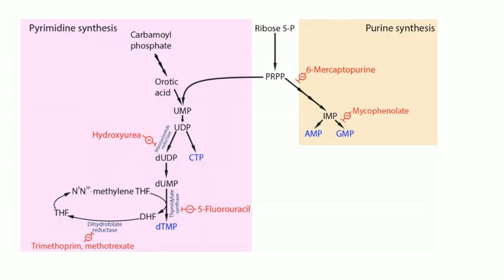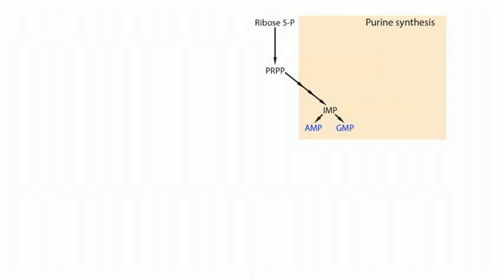For purine synthesis, you start with the sugar rather than the base. Compared to pyrimidine synthesis, de novo purine synthesis is less complicated. It starts by converting ribose-5-phosphate to PRPP. The rate-limiting step is catalyzed by glutamine-PRPP amidotransferase. The cancer drug 6-mercaptopurine (6-MP) inhibits PRPP amidotransferase, thereby inhibiting purine synthesis.